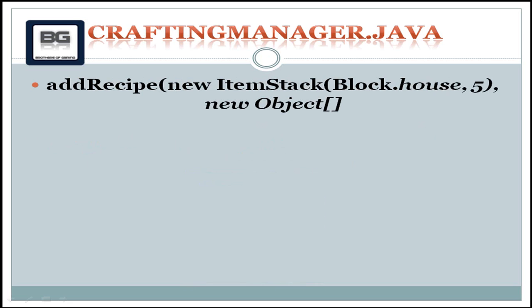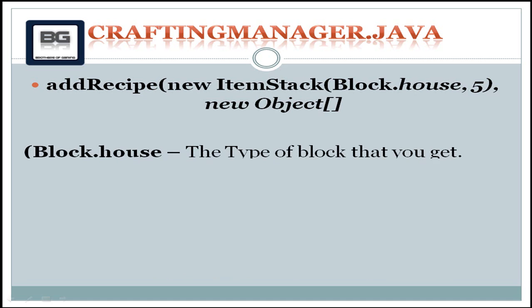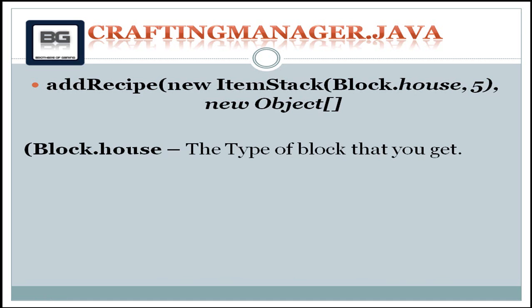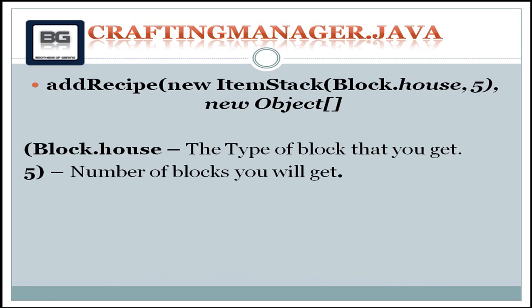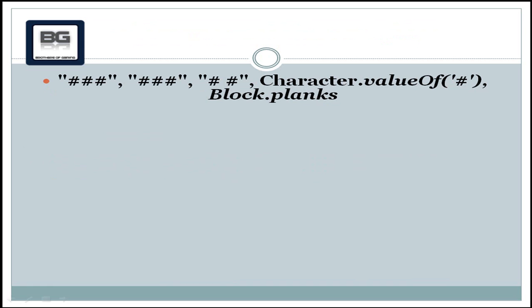We also edited CraftingManager.java, where we wrote `addRecipe(new ItemStack(block.house, 5), new Object[]{...})`. `block.house` is the type of block you will get — in our case the block we created. The `5` is the number of blocks you will receive; if you change it to 3, you get 3 blocks, and so on.